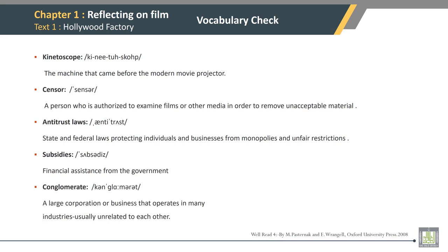Vocabulary Check. Kinetoscope: the machine that came before the modern movie projector. Censor: a person who is authorized to examine films or other media in order to remove unacceptable material. Antitrust laws: state and federal laws protecting individuals and businesses from monopolies and unfair restrictions. Subsidies: financial assistance from the government. Conglomerate: a large corporation or business that operates in many industries, usually unrelated to each other.